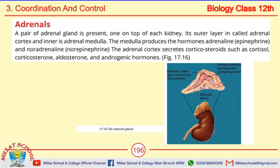Where are adrenals present? A pair of adrenal glands is present, one on the top of each kidney. Its outer layer is called the adrenal cortex and the inner layer is called the adrenal medulla.